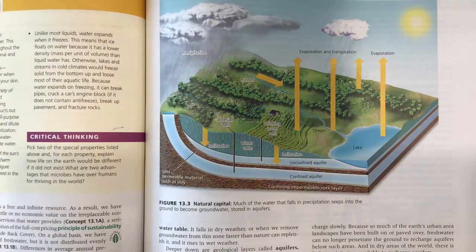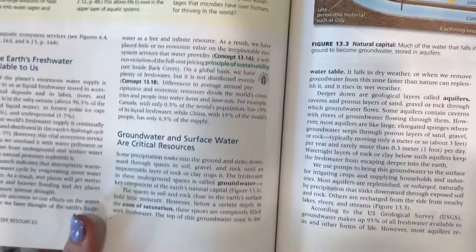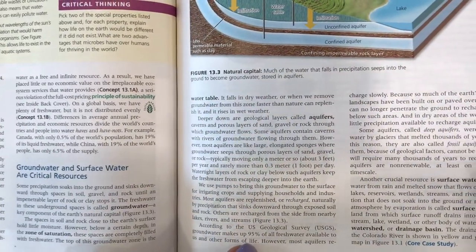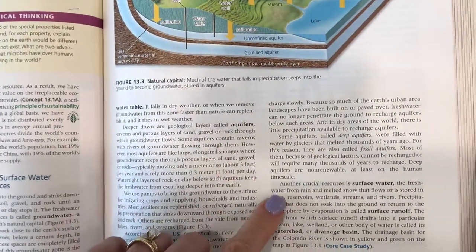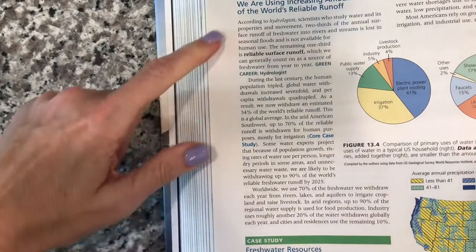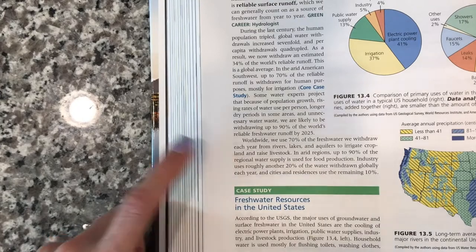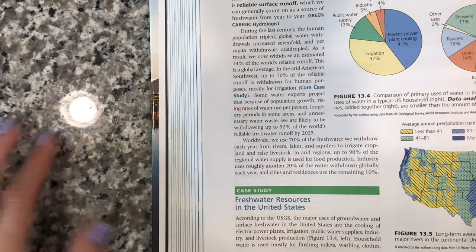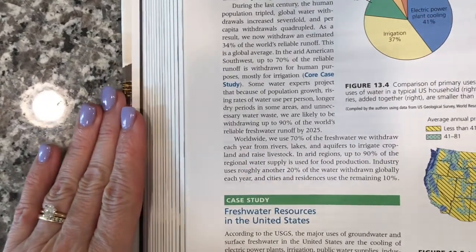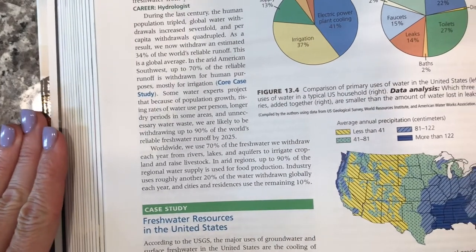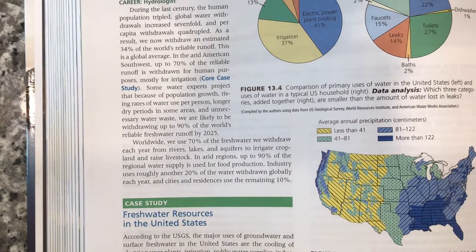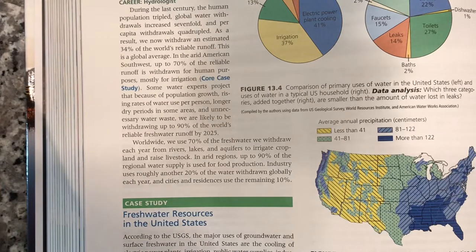Worldwide, we use 70% of the fresh water we withdraw to irrigate crops and raise livestock. The second biggest use is industry, followed by individual use. While it's good for individuals to reduce their water usage, if you really want to cut down on fresh water consumption you need to pressure agriculture and industry to be more responsible with a resource that all of us need.